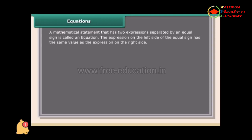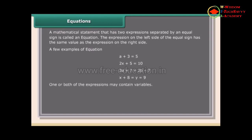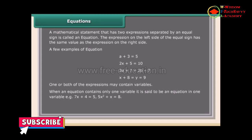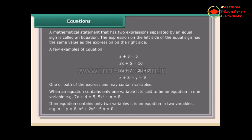The expression on the left side of the equal sign has the same value as the expression on the right side. One or both expressions may contain variables. When an equation contains only one variable, it is an equation in one variable — for example, 7x + 4 = 5 or 5x² + x = 8. If an equation contains two variables, it is an equation in two variables — for example, x + y = 8 or x² + 2y² - 5x = 0.